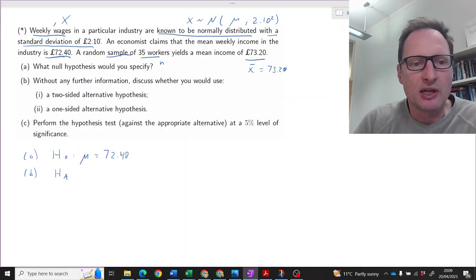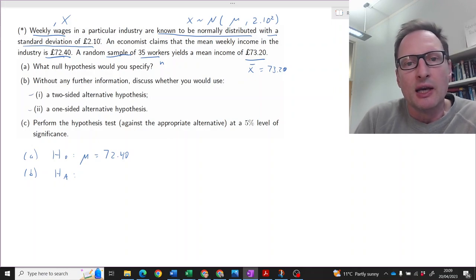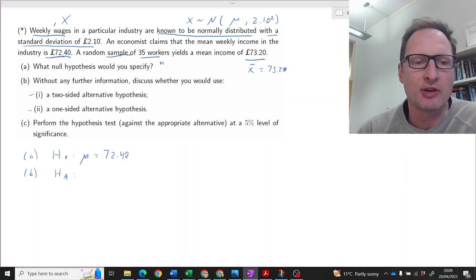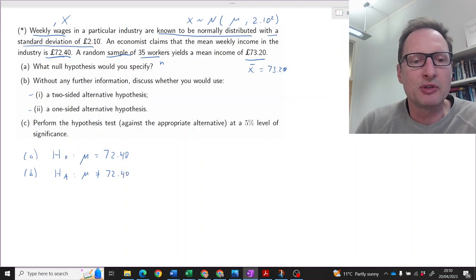The next part of the question is: What should we use as an alternative hypothesis? Should we use a one-sided or two-sided alternative? This question doesn't give us any further hint. It doesn't say that the economist is concerned about low wages or high wages, just says here's my claim, 72.4. So let's test that claim and see whether the sample delivers evidence that the average wage is actually different to 72.4.